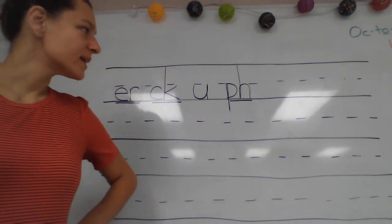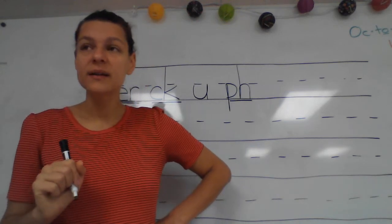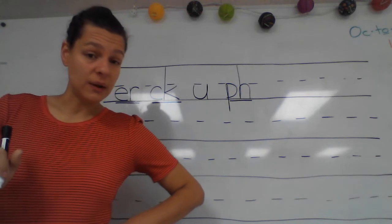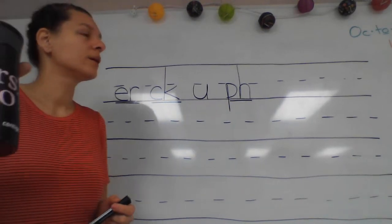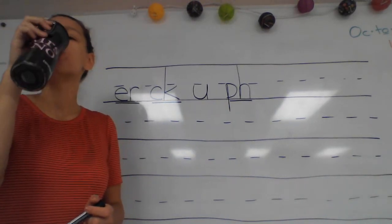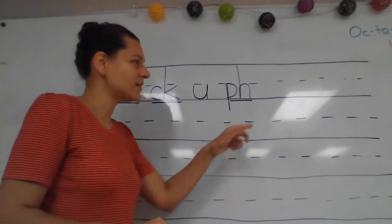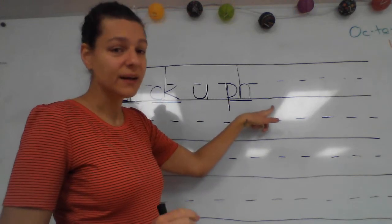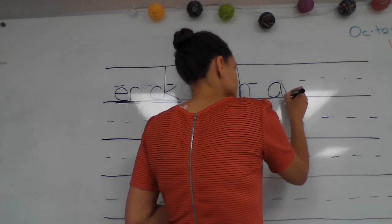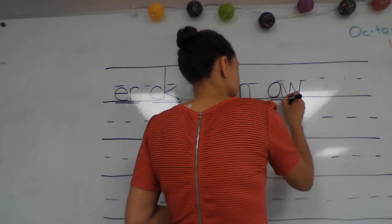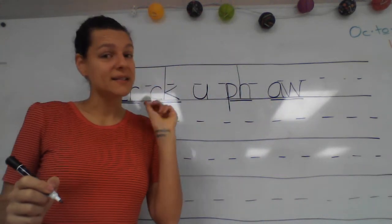Next, let's do 'a' that we do use at the end of English words. What are you going to write? Good. A that we do use at the end of English words. Write it and say it while you write it. Put your finger under that phonogram you just wrote. What does it say? Good. A that we do use at the end of English words. If you didn't have it, write it and say it while you write it.